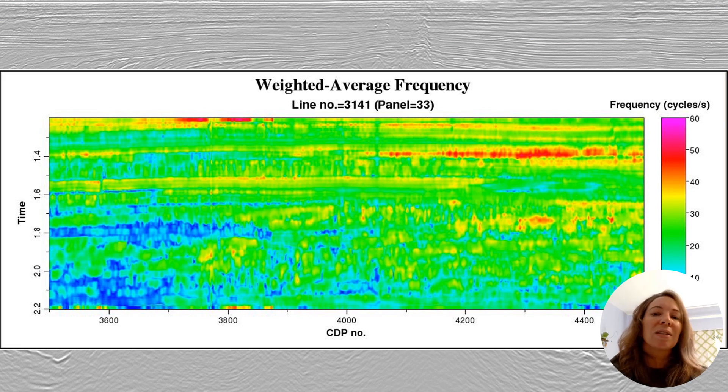The weighted average frequency provides a more stable frequency estimate by computing a running average of instantaneous frequencies weighted by the squared envelope, which effectively emphasizes the frequencies associated with strong reflections. Unlike simple instantaneous frequency, this attribute remains stable even in low amplitude regions where traditional frequency calculations might become erratic.